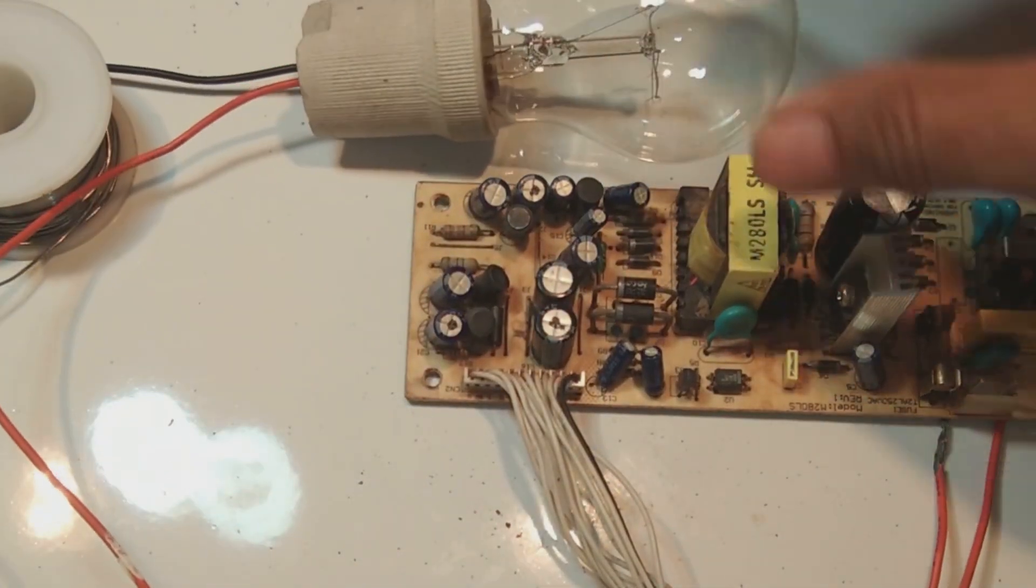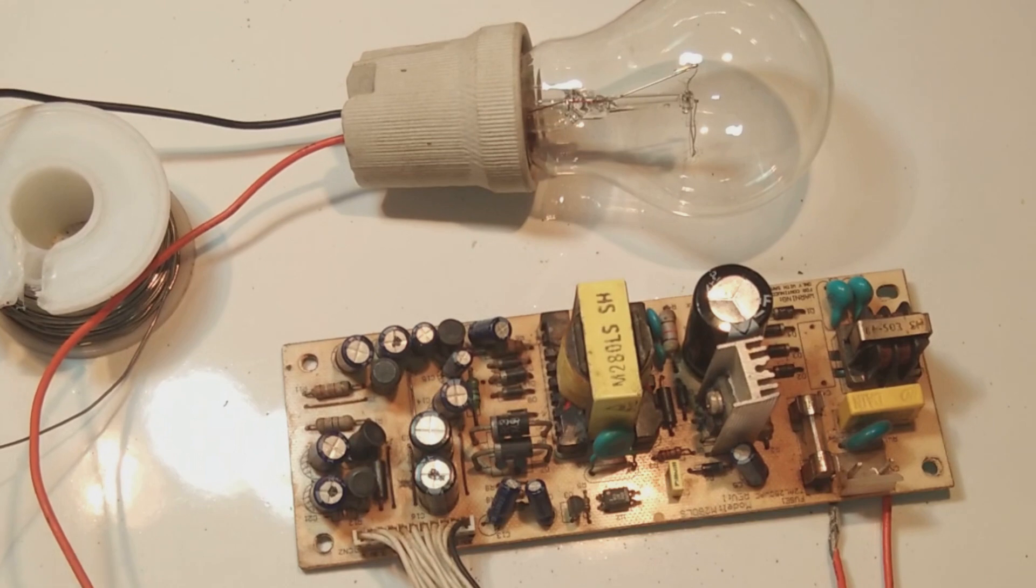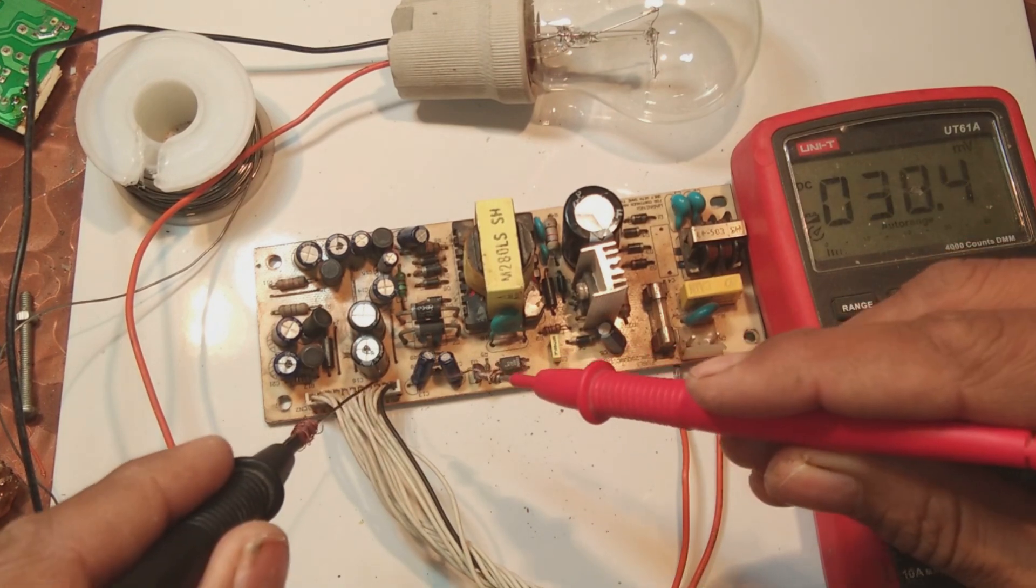Now I am going to power it up. The series lamp is in the way, so let us see how it powers up. As you saw, the light came and it switched off. Now the power supply is switched on but the light is not glowing - it means it's okay.